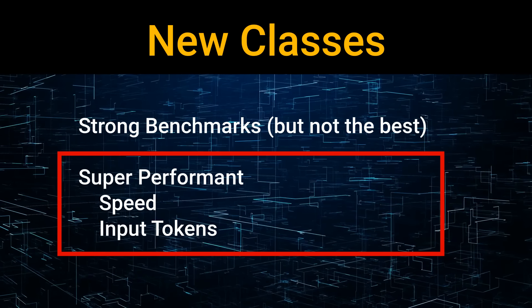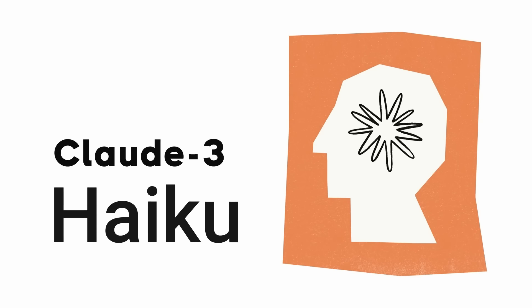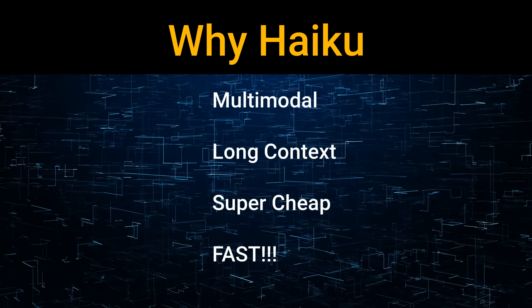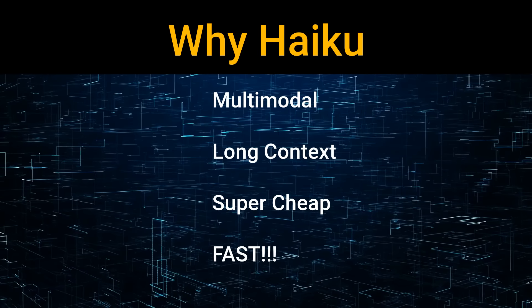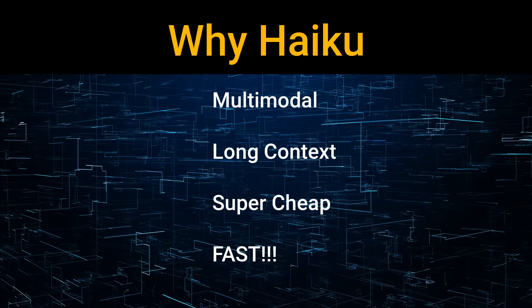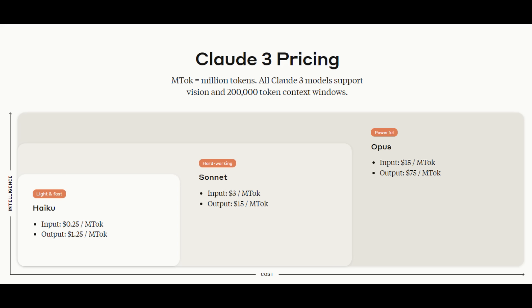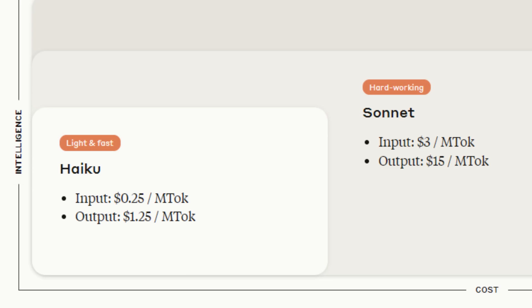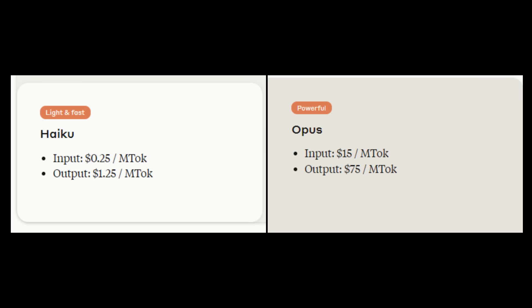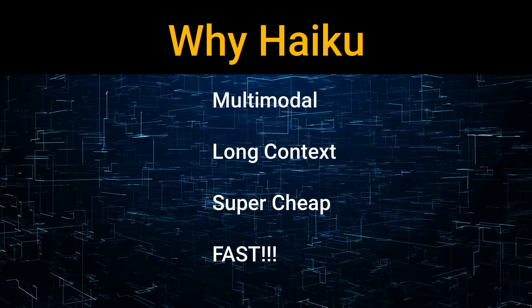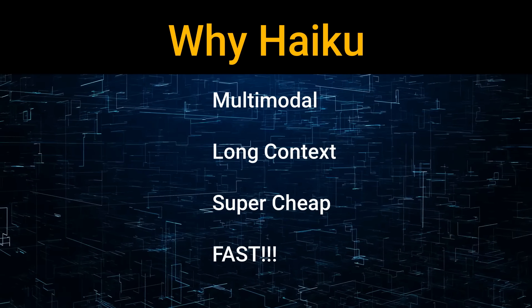On top of those benchmarks, they're super performant — their speed is really good, they still have very big context windows, and generally the tokens are going to be quite cheap. Looking at why Haiku specifically: it's multimodal, it's got a really long context window, and it's super cheap. Looking at the pricing, Haiku is only $0.25 per million tokens input and $1.25 per million tokens output, comparing that to the top of the line where it's $15 for input tokens and $75 for output tokens. This cheapness allows us to do a lot of different things, and then the speed changes the game.